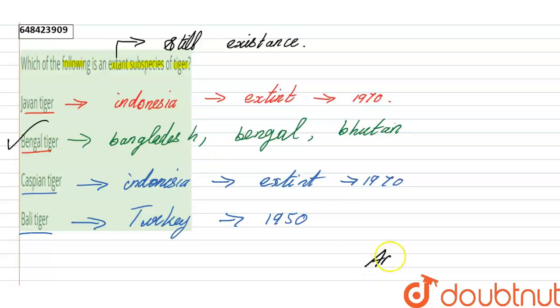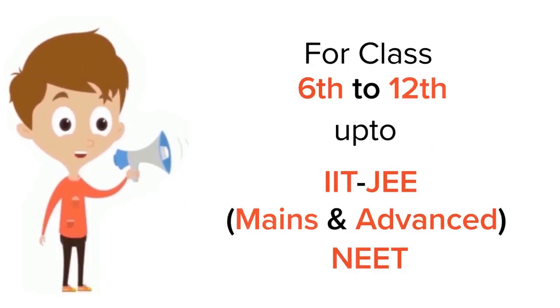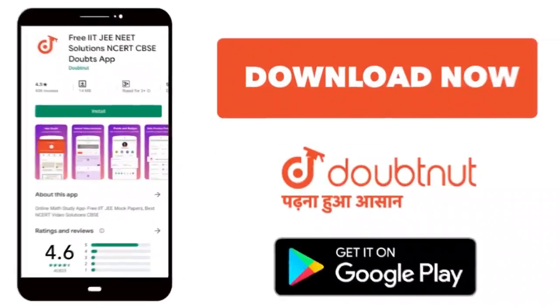The answer for this question is option B, Bengal tiger. Thank you. For class 6 to 12, IIT-JEE and NEET level, trusted by more than 5 crore students, download Doubtnut app today.